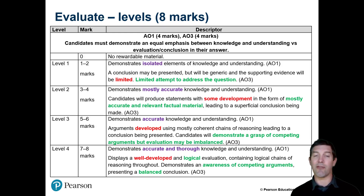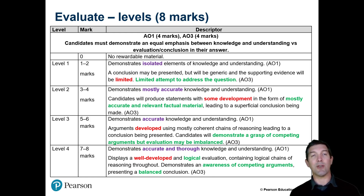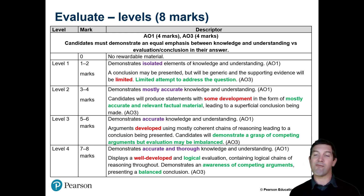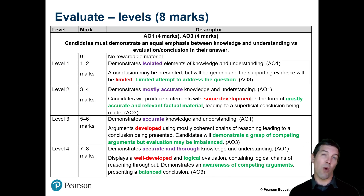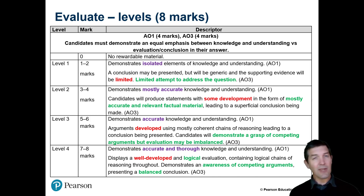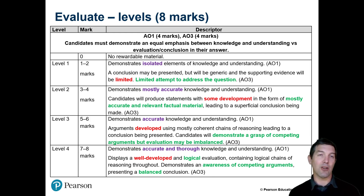Here's what the level-based mark scheme looks like for evaluate. The AO1 descriptors are basically always the same — accurate and thorough to get into the top band. There are some fairly subtle differences when it comes to evaluate, assess, and to what extent for the AO3 descriptors. For evaluate, we're looking for competing arguments and logical chains of reasoning. A good example of a logical chain of reasoning is when the first bullet point of AO1 matches with the first bullet point of AO3 and the logical chain links those ideas together, explaining the connections between them. For evaluate, we're also looking for a balanced conclusion which presents the strengths and limitations and ties it all together.